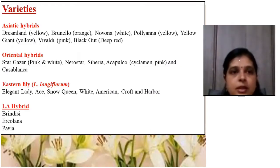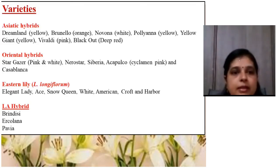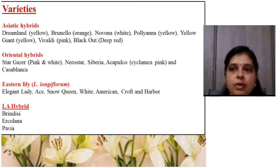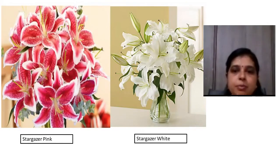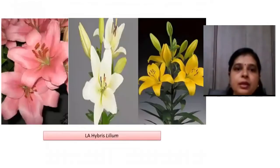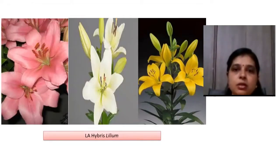Popular varieties in Asiatic lilium include Dreamland, Brunello, Novana, and Pollyana. Oriental hybrid varieties include Stargazer Pink and Stargazer White. In Easter lily, Elegant Lady, Snow Queen, White American, and Harbor are cultivated. For LA hybrids, Brindisi, Aircolana, and Pavia are the more popular cultivars.